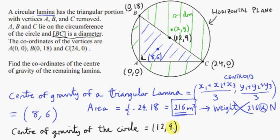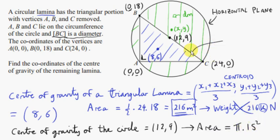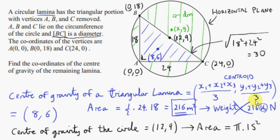Now let's get the area of the circle, which we'll use for the weight of the circle. The area is pi r squared. The radius: using the right-angle triangle, the hypotenuse is the square root of 24² + 18² = square root of 900 = 30 meters, and half of 30 is 15. So the radius is 15, and the area of the circle is π × 15² ≈ 706.86 square meters.